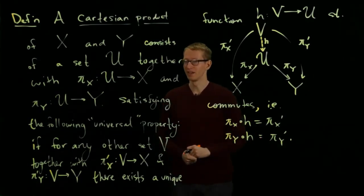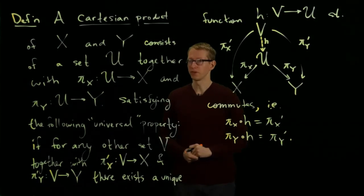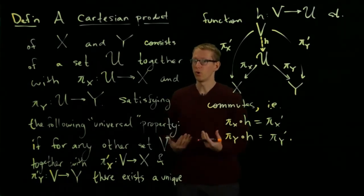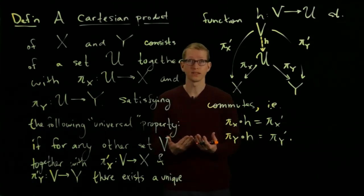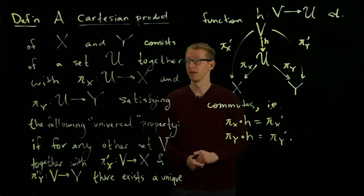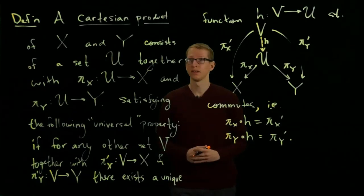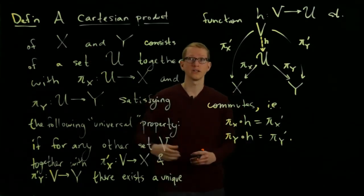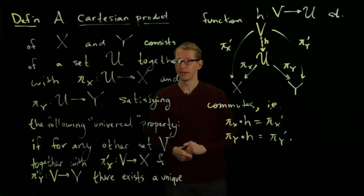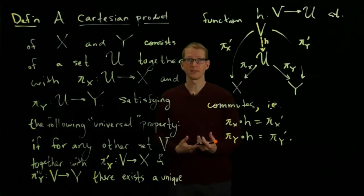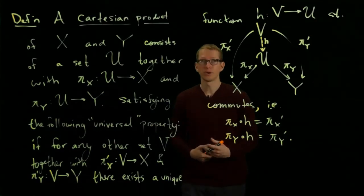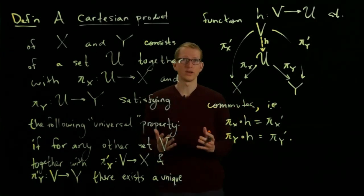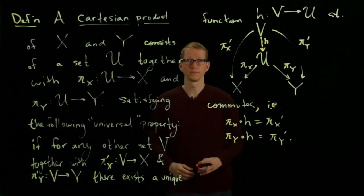The first question is: does such a thing exist? Second, if such a thing exists, how many are there? Is there just one product? Is it okay to call it 'the' Cartesian product? In order to even make sense of that second question about uniqueness, what do I even mean by uniqueness? How many products can I have? We'll address this issue in the next video, and we'll see you next time.